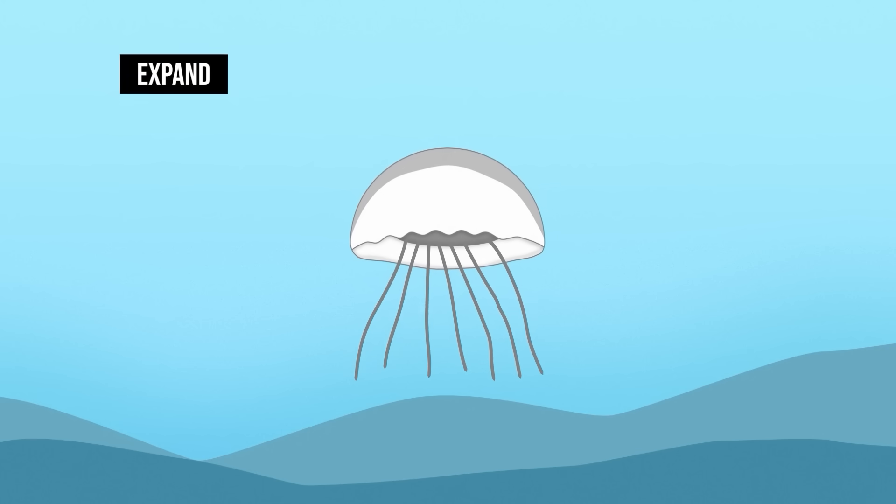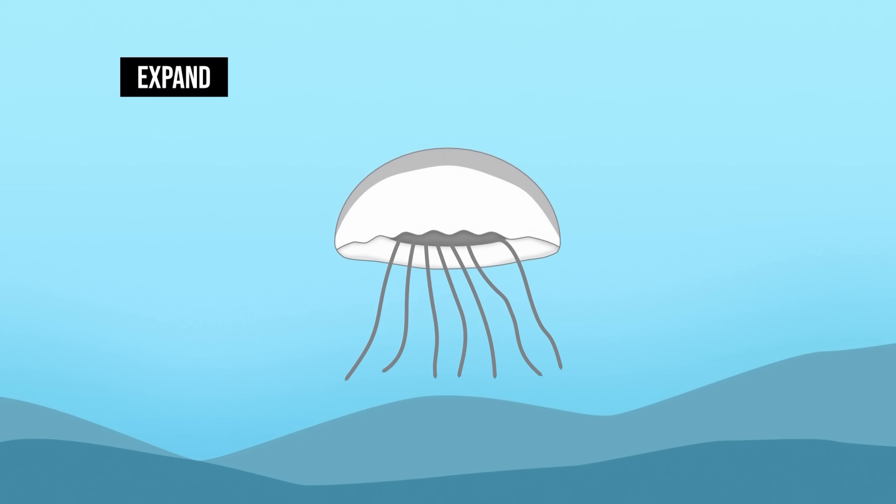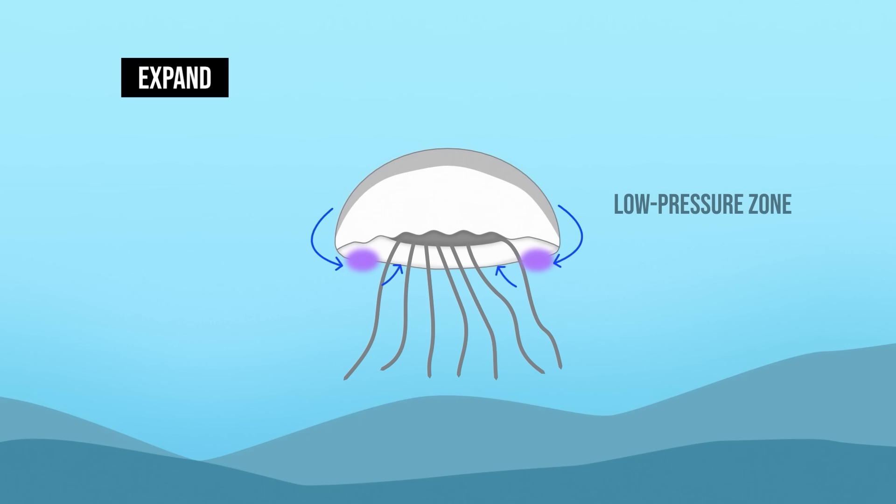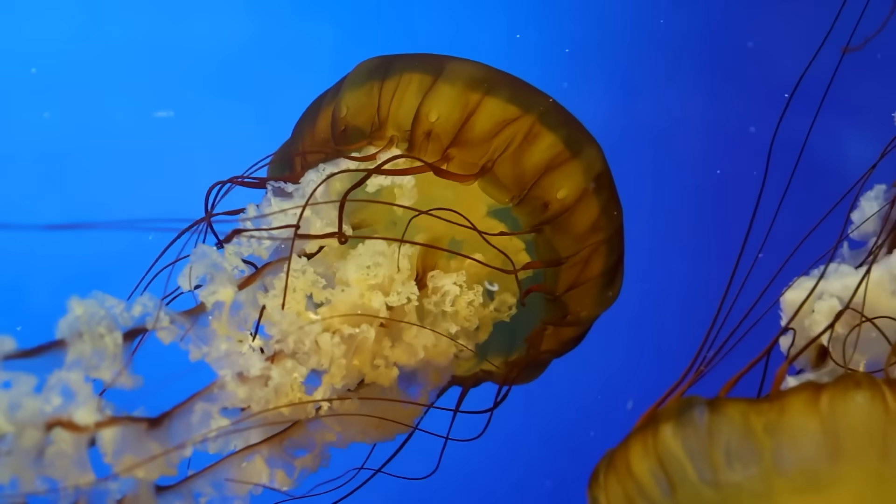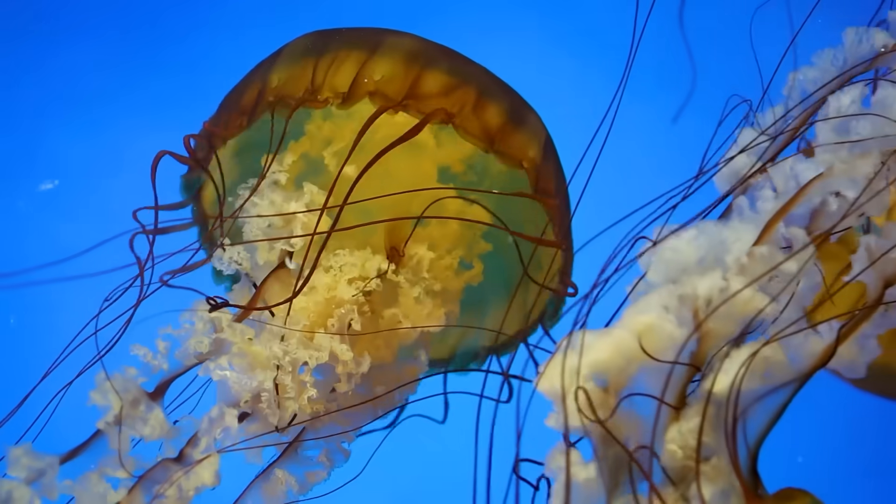As the jellyfish relaxes the bell, it passively returns to its original shape, creating a low-pressure zone beneath it. This low-pressure area pulls surrounding water inwards, generating another vortex that assists in forward movement with minimal effort.